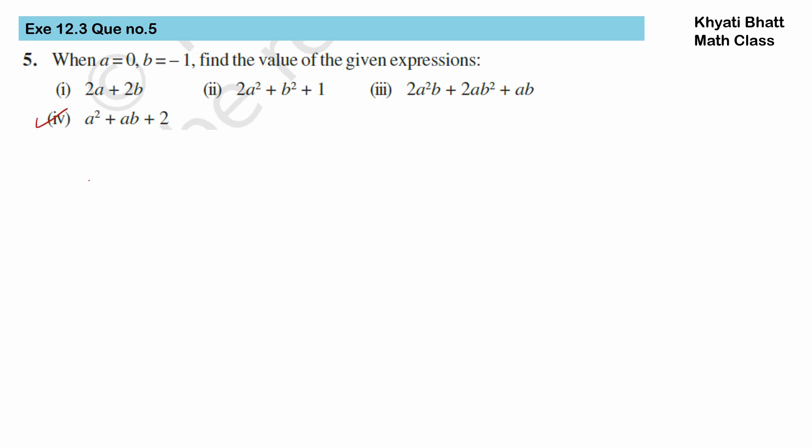Fourth expression: a² plus ab plus 2. Let us insert the values for a and b. Here, a's value is 0, so 0 squared is 0, plus a into b. So 0 into b is minus 1, plus 2. Now, the first one, 0 squared is 0. Here, 0 into minus 1 will give us 0, and then plus 2. So our final answer is 2.